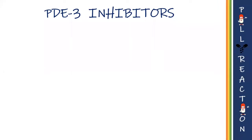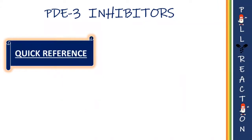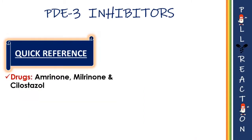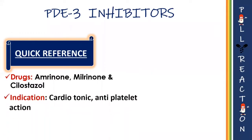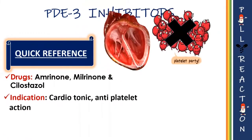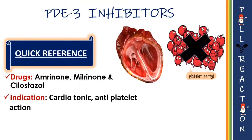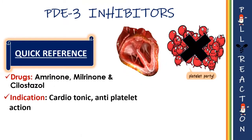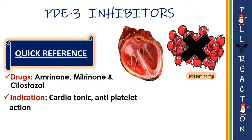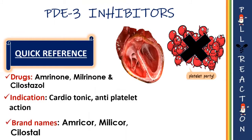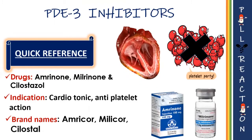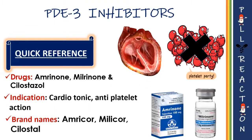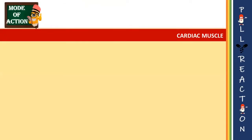For a quick reference, some common phosphodiesterase 3 inhibitor drugs are amrinone and milrinone, which are used as cardiotonics in the treatment of congestive cardiac failure, whereas cilostazol inhibits platelet aggregation. These are sold under the brand names Amicor, Milicor, and Cilostal.